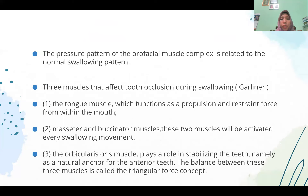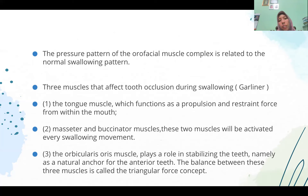The pressure pattern of the orofascial muscle complex is related to the normal swallowing pattern. Three muscles that affect occlusion during swallowing, according to Garliner, are: one, the tongue muscles, which function as a propulsion and restraining force from the middle of the mouth; two, the masseter and buccinator muscles, which are activated with every swallowing movement; and three, the orbicularis oris muscle, which plays a role in stabilizing the teeth as a natural anchor for the anterior teeth. The balance between these three muscles is called the triangular force concept.